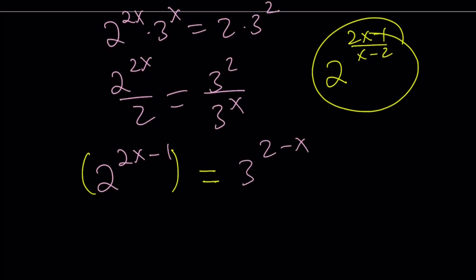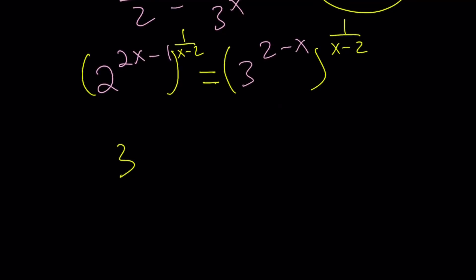Now I'm going to be raising both sides to the power of 1 over x minus 2. And this one is going to be 1 over x minus 2. And then the left hand side is going to give me what I need. 2x minus 1 over x minus 2. I know, I know. I wrote the wrong base. That's supposed to be a 2 there. Okay.